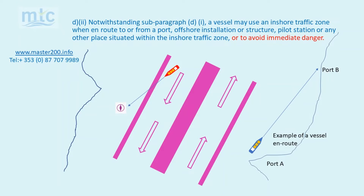Notwithstanding subparagraph D1, a vessel may use an inshore traffic zone when en route to or from a port, offshore installation or structure, pilot station or any other place situated within the inshore traffic zone, or to avoid immediate danger. The red vessel is on route between port A and port B, which are on the inshore zone. Vessels may also leave the traffic separation scheme to avoid immediate danger.